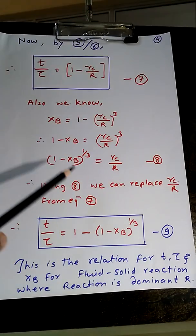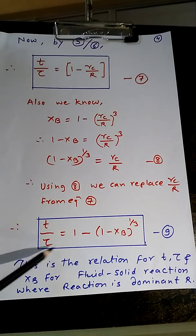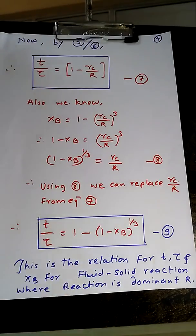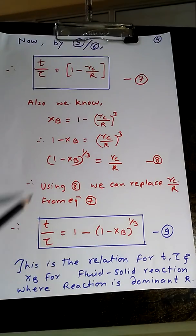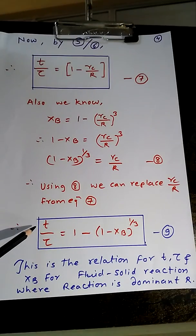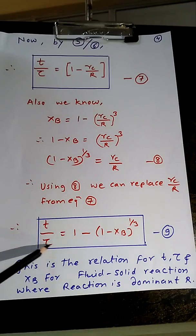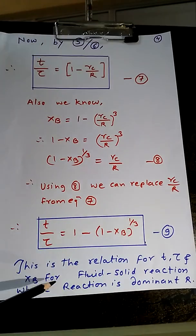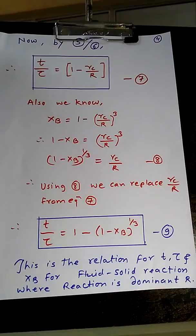After substituting this equation 8 in 7, you will get t/τ = 1 - (1 - XB)^(1/3). Now this is the final expression that you want, relating t, τ, and XB for our case of chemical reaction as dominant resistance. Thank you.